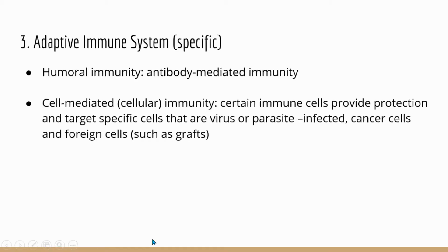Alright, now let's look at the adaptive immune system, which is the third line of defense. This particular type of immunity is very specific — they only target a specific virus, a specific bacterium, or specific parasites. In this particular immune system, there are two arms.